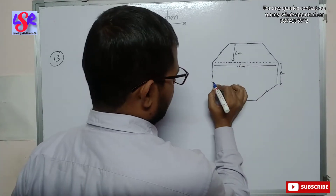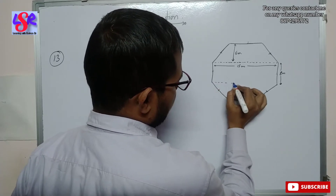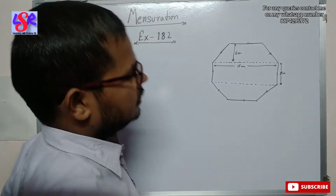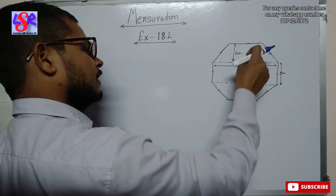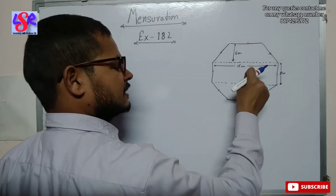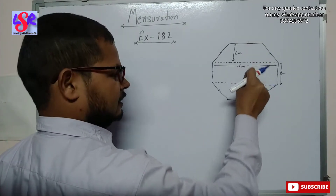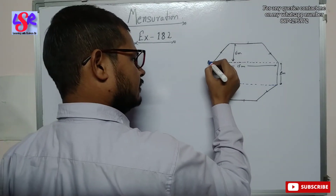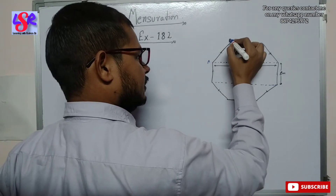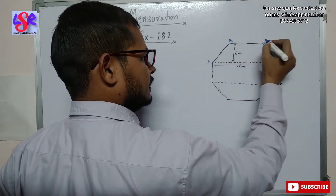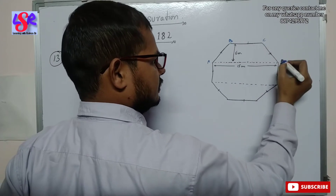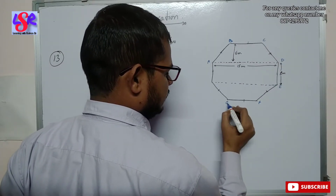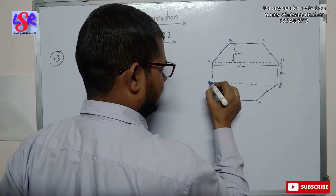We are going to join two points and divide the whole octagon into three parts: first a trapezium, second a rectangle, and the third again a trapezium. We are going to name the vertices A, B, C, D, E, F, G, and H.